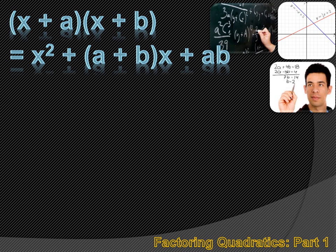There are a couple of interesting things to notice. First, the first term in the quadratic is the first term in each of the binomials squared — that makes sense because we multiply x times x, that's our first in FOIL. Also, the last term in the quadratic is the product of the last term in each of the two binomials — that's the L for last in FOIL. And the middle term in the quadratic is the sum of the last terms in each binomial multiplied by the first term.